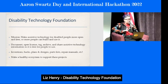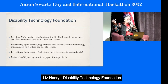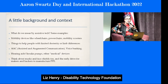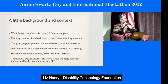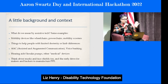What do I mean by assistive tech? Mobility devices like wheelchairs — manual wheelchairs, power chairs, mobility scooters — and things to help people with limited dexterity or limb differences. For example, how do you put your shirt on when you have one arm? There are all kinds of devices that help you do things like zippers and buttons.